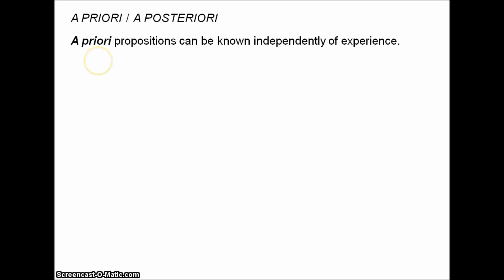A priori, a posteriori. A priori propositions are propositions that can be known independently of experience — this is about how we come to know things, how we accumulate our knowledge. In order to come to know an a priori proposition, we don't need to consult the external world. We can just sit in an armchair and think about it — that's sufficient to know the truth of an a priori proposition.